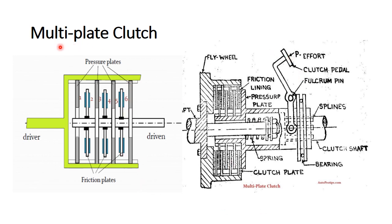In the Multi-plate Clutch, one component is the flywheel — that is the shaft which is attached with the engine. That is the pressure plate. That is the friction lining. Here is the clutch pedal. That is the fulcrum. That is the splines. That is the clutch shaft, also called the driven shaft. That is the bearing. That is the spring, which is used for both compression and tension. Here are the clutch plates — three, four clutch plates in total. Friction linings are also shown in the figure.